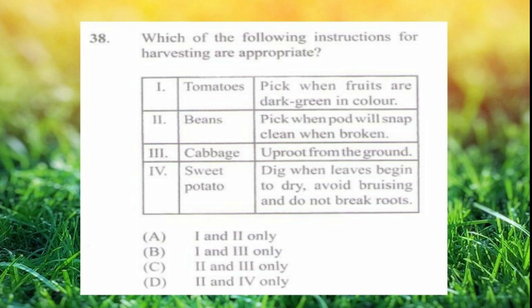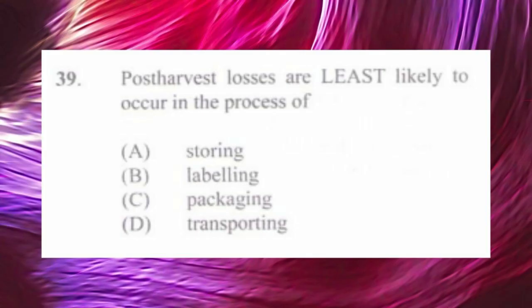Question number thirty-eight: which of the following harvesting instructions are appropriate? One) tomatoes — pick when fruits are dark green, two) beans — pick when pods will snap clean when broken, three) cabbage — uproot from ground, four) sweet potato — dig when leaves begin to dry, avoid bruising and do not break roots. The answer is d) two and four only.